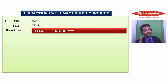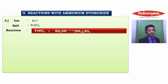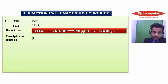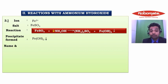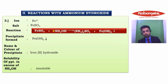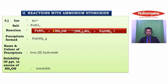NH4 has valency 1 and SO4 has valency 2, so the product is (NH4)2SO4. You need to be careful in balancing this reaction — you must multiply NH4OH by 2. The precipitate formed is Fe(OH)2. The colour of this precipitate is dirty green. By the colour, we identify that this is iron, the same way as with sodium hydroxide. Even if you add excess ammonium hydroxide, it is still insoluble. Hence we conclude iron.